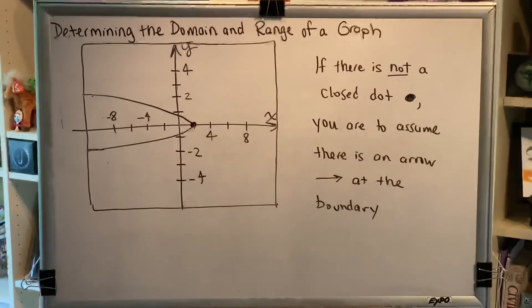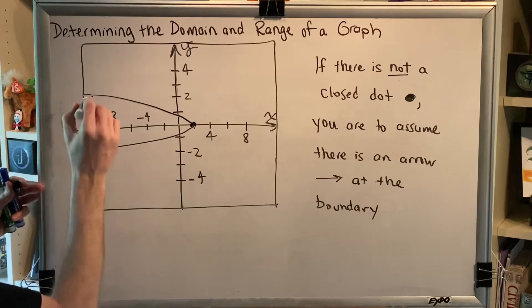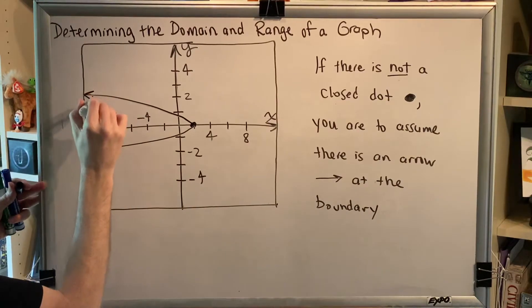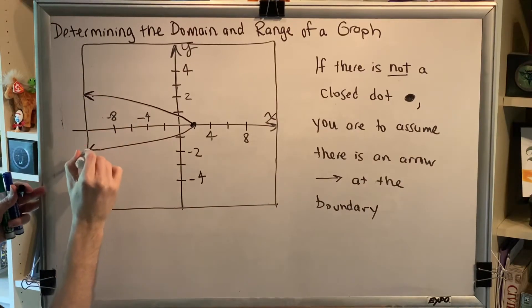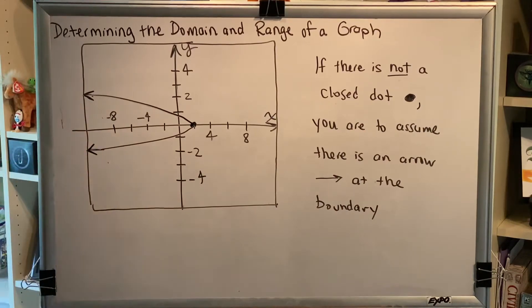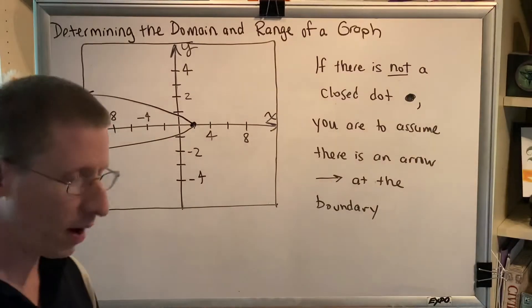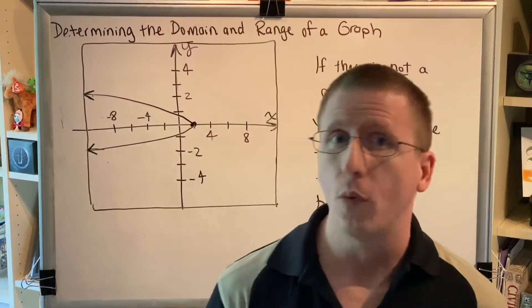So what that means is when we see something like this in a software package, it is our responsibility to know that there should be an arrowhead here and here and that this graph continues. Okay, with this in mind, we are now ready to find our domain and our range.